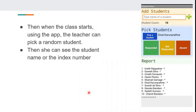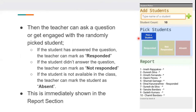Then when the class starts, using the mobile app the teacher can pick a random student by pressing the pick a student button. Then the student's name or index number will be shown on screen. The teacher can then ask a question or get engaged with the randomly picked student.